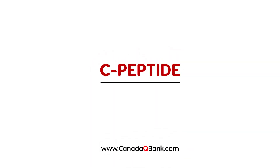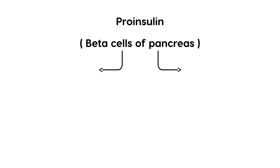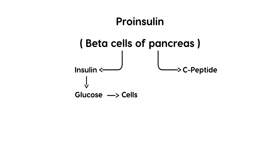C-peptide is the topic for this video. It starts off with a molecule known as proinsulin, which is secreted by the beta cells of the pancreas. When proinsulin is synthesized, it cleaves into two segments: insulin and C-peptide. Insulin is responsible for bringing glucose back into the cells, but measuring C-peptide levels is helpful in determining whether you have an endogenous or exogenous source of insulin.